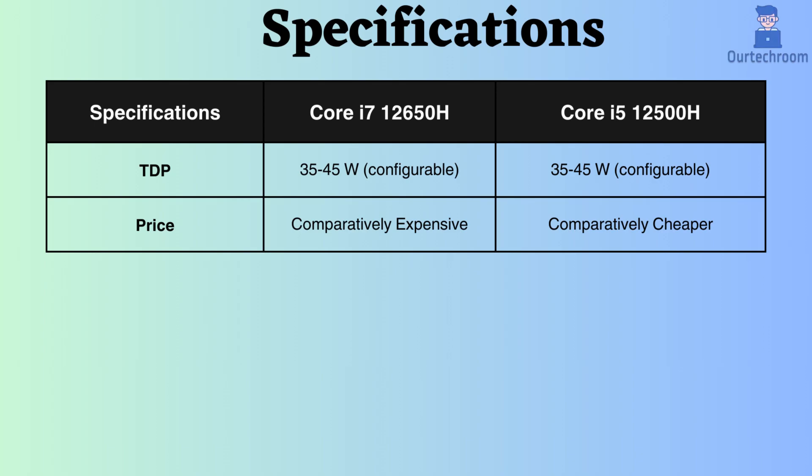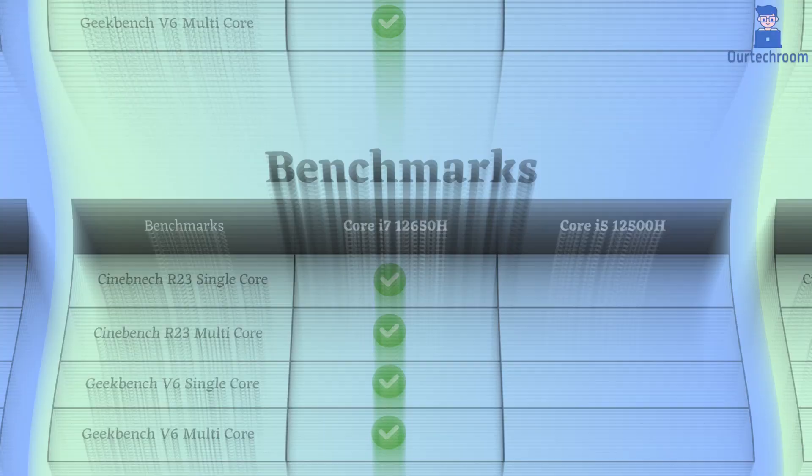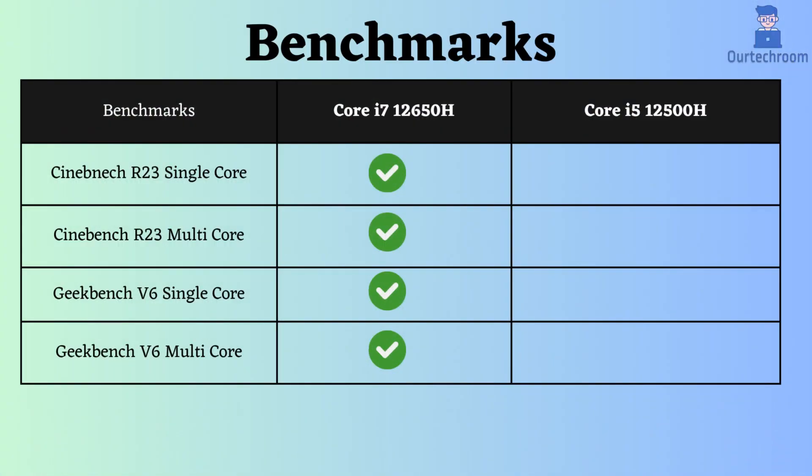In terms of benchmark comparison, the Core i7-12650H appears to perform better in Cinebench R23 single and multi-core tests, Geekbench V6 single and multi-core tests, as well as Passmark single and multi-core tests.